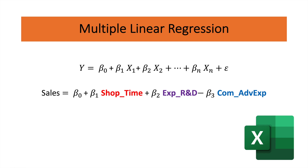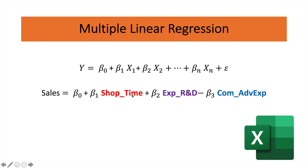For this video, we're going to discuss a multiple linear regression model which has three independent variables. In this model, we want to see what is the impact of shopping time — which is our first independent variable — on sales. Technically, if people are shopping for a longer time or staying longer in your store, we want to see what is the impact on your sales — for example, if one extra minute would increase your sales by how much.